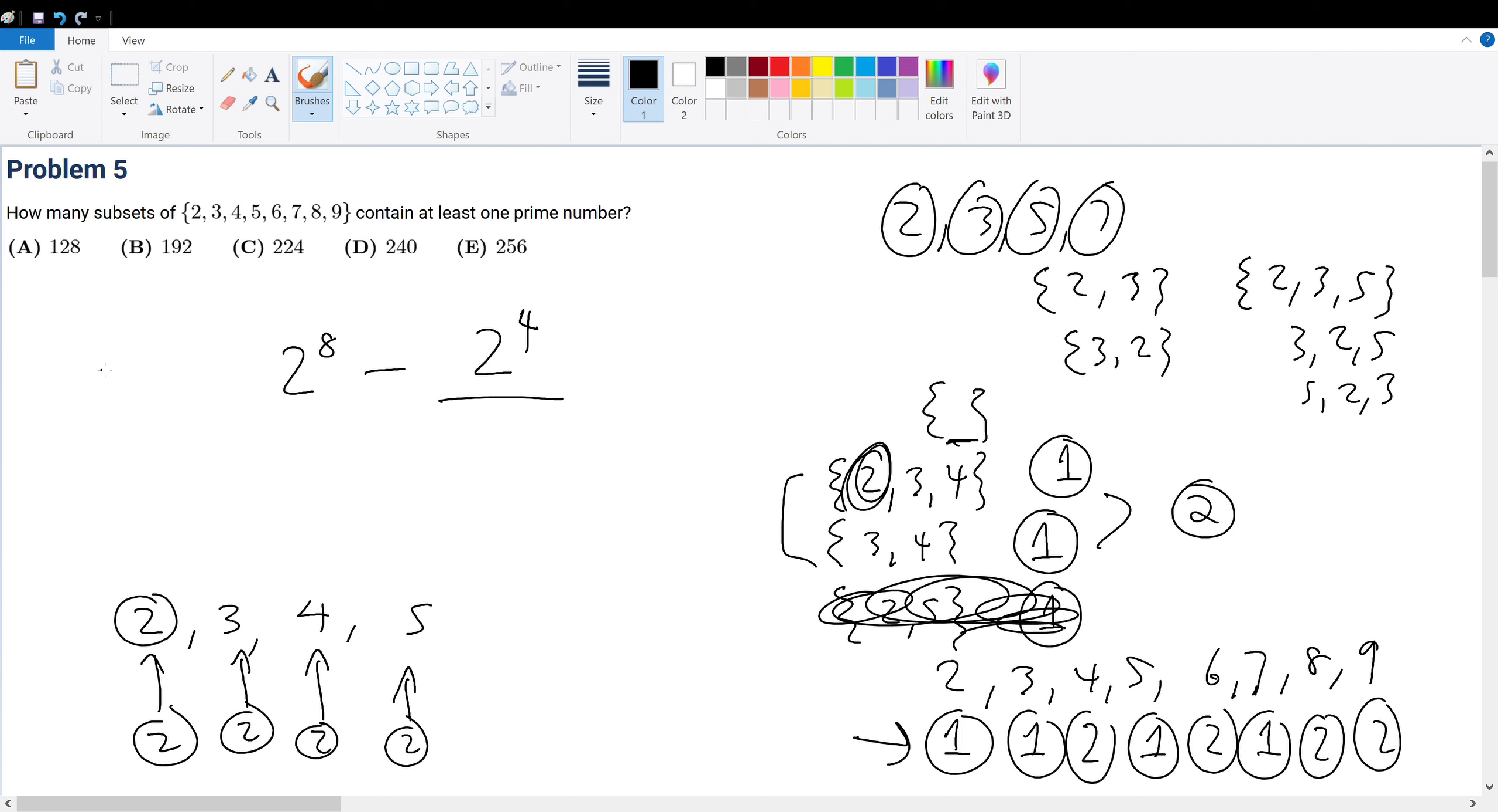So what is 2 to the 8? Well, we know 2 to the 10 is equal to 1024. Always remember this. So we divide by 2 squared. Divide by 2 squared, which is equal to, if we divide by 2 first, that's 512. 512 divided by 2 minus 2 to the 4. Well, 2 to the 4 is 16. And this is equal to 256 minus 16, which is 240, which is your final answer, which is D.